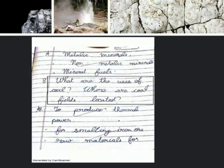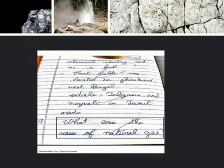Question 8. What are the uses of coal and where are coal fields located? Coal is used to produce thermal power, for separating iron ore, as raw material for the chemical industry, and also as fuel. Coal fields are located in Jharkhand, West Bengal, Odisha, Telangana, and Neyveli in Tamil Nadu.